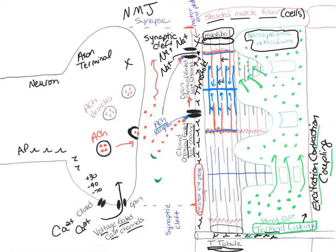When all of these sarcomeres in the myofibril contract and shorten, then the whole myofibril will shorten. If that happens in all of the myofibrils, then all the myofibrils will shorten and the entire skeletal muscle fiber will shorten. When calcium is released from the sarcoplasmic reticulum, all of the myofibrils in the muscle fiber are going to contract. If enough muscle fibers in that skeletal muscle shorten, then the muscle develops what we call tension.